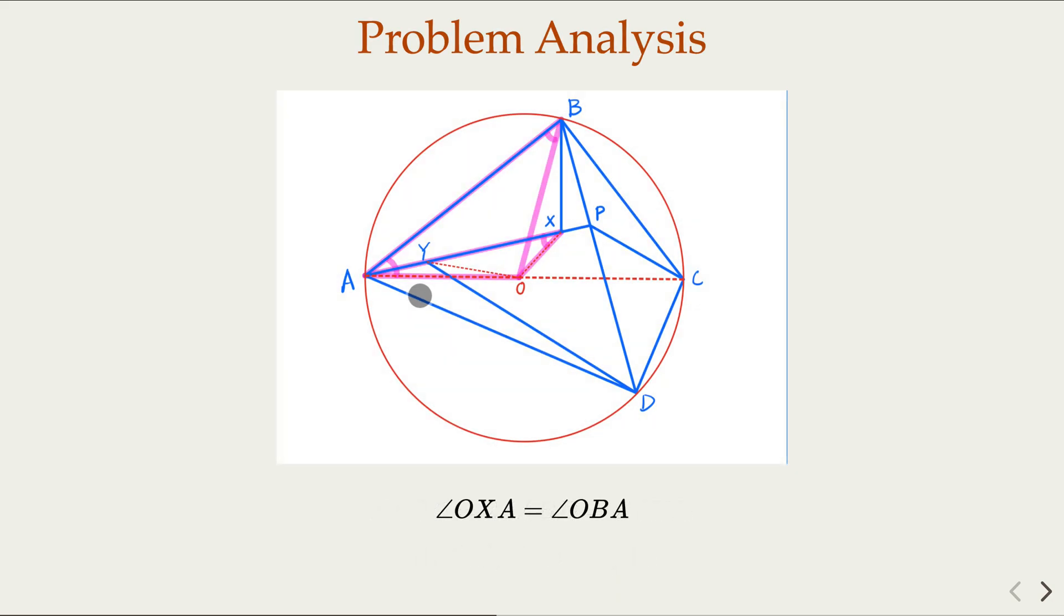Now we're going to do some analysis about the angles. We start with angle OXA equals angle OBA because ABXO are on the same circle. Since O is the center of the circle, OA and OB equal each other, so these two angles equal each other.